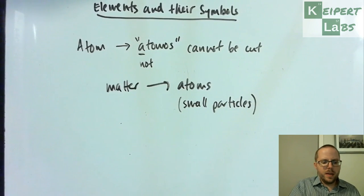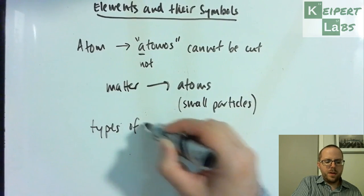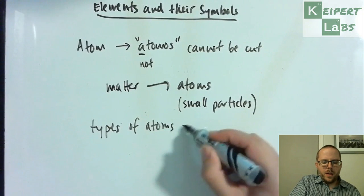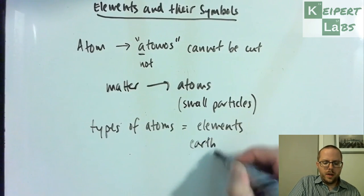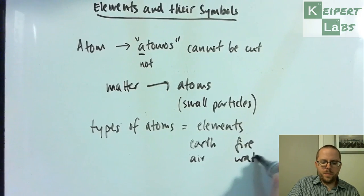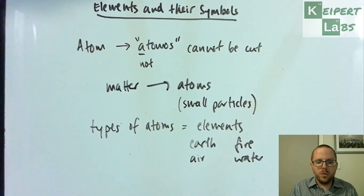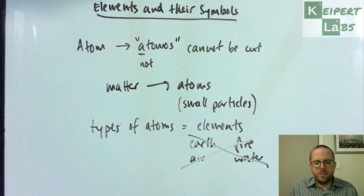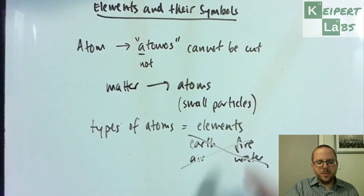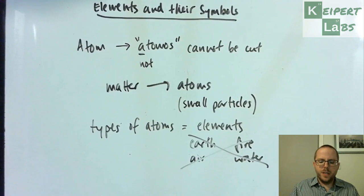We've also identified that we get different types of atoms and that we refer to those as elements. The concept of elements has been around for thousands of years. The ancient Greeks thought of four elements: earth, air, fire, and water, and they believed that all things were comprised of these combined in some way. For example, earth and water combined together to make mud. Today we recognize that these concepts don't fit and we've moved beyond that, but we still use the same kind of idea of what elements are.